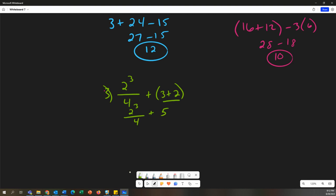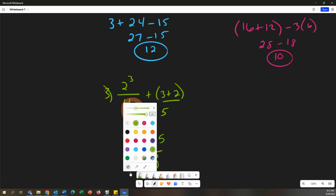Now we have E, exponents. Remember, this 2 to the third right here is 2 to the third, which is 2 times 2 times 2, which is 8. Now we're at multiplying and dividing. 8 divided by 4 is 2. And then adding and subtracting, 2 plus 5 is 7. Okay, let's try one more together.